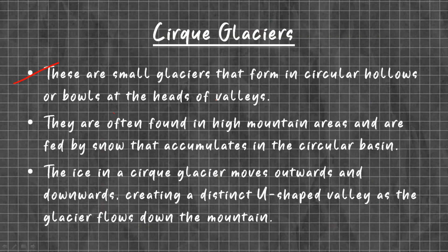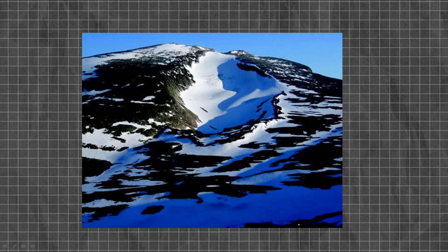Cirque Glaciers are small glaciers that form in circular hollows or bowls at the head of valleys. They are often found in high mountain areas and are fed by snow that accumulates in these circular depressions called cirques. The ice in cirque glaciers moves outwards and downwards, creating a distinct U-shaped valley as the glacier flows down the mountain. As you can see in this picture, this is a cirque glacier.